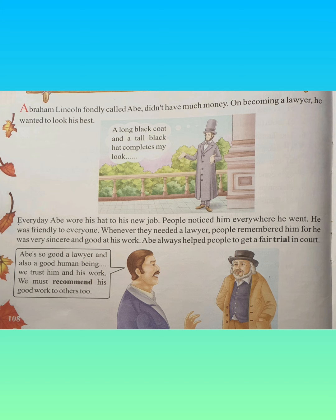Abraham Lincoln, fondly called Abe, didn't have much money. On becoming a lawyer he wanted to look his best. Underline fondly — fondly means with affection, with love. So Abraham Lincoln was called Abe by people and he didn't have much money because he belonged to a poor family. But once he became a lawyer he wanted to look his best and wear nice clothes. He decided: a long black coat and a tall black hat — that completes my look.